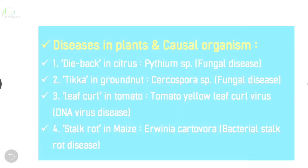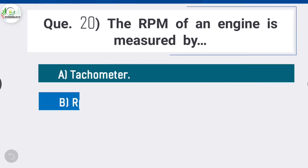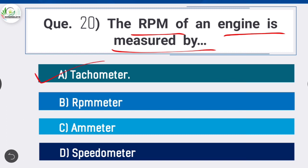Question 20: The RPM (revolution per minute) of an engine is measured by — option A is correct: tachometer. A tachometer, also called a revolution counter, is an instrument measuring the rotation speed of a shaft or disc, as in a motor or other machine.